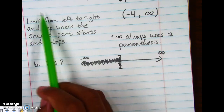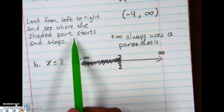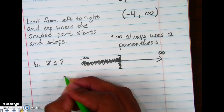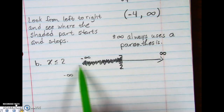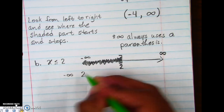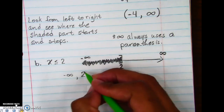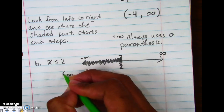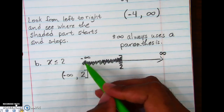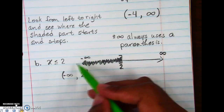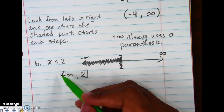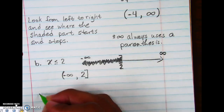Look from left to right to see where the shaded part starts and stops. The shaded part goes all the way over to negative infinity and stops at 2. So we write: negative infinity, comma, 2. We have a bracket on 2, and always a parenthesis on infinity — always. Up here on the graph the shaded part has no parenthesis on the infinity because it goes on forever, but we put one on a number. So parentheses only come in interval notation.